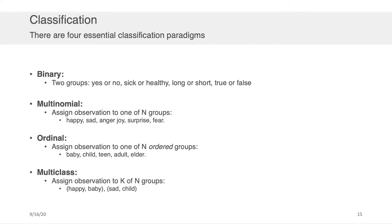When people perform classification, there are four major modalities or paradigms. The first one is binary classification — that's when you have two groups and you want to distinguish between them: yes or no, sick or healthy, long or short, true or false, and so on.